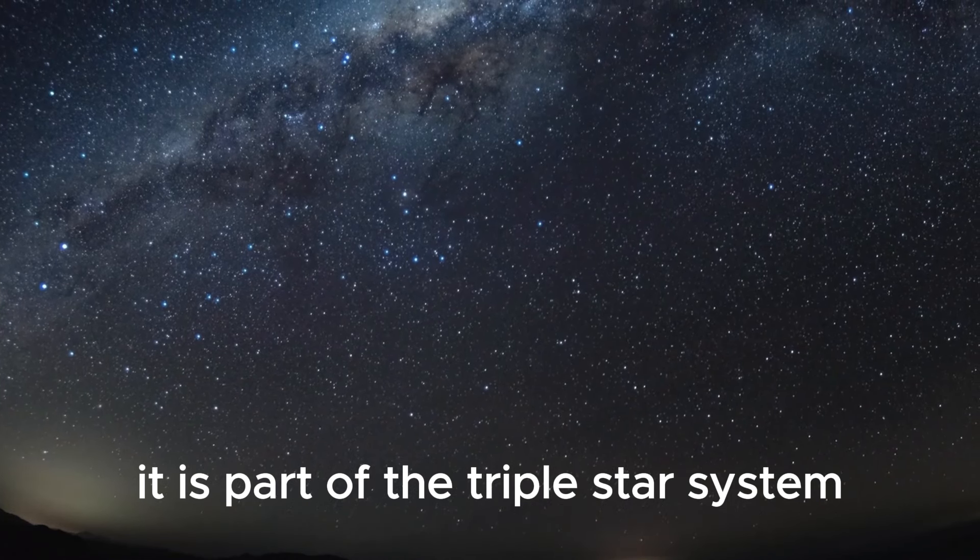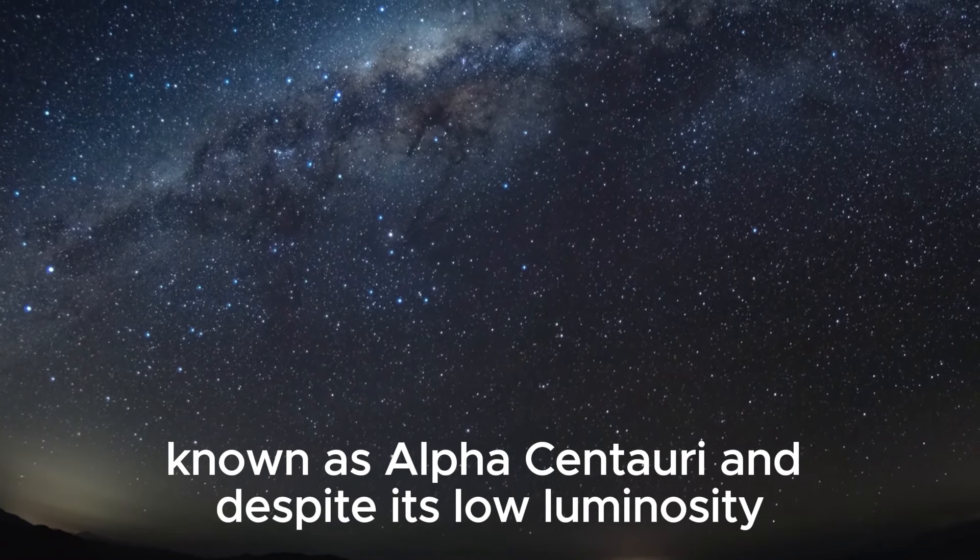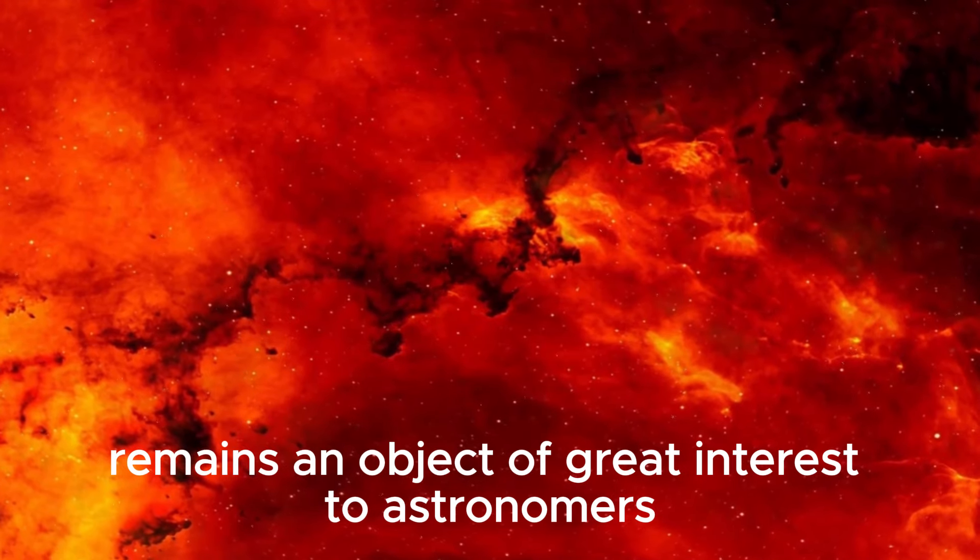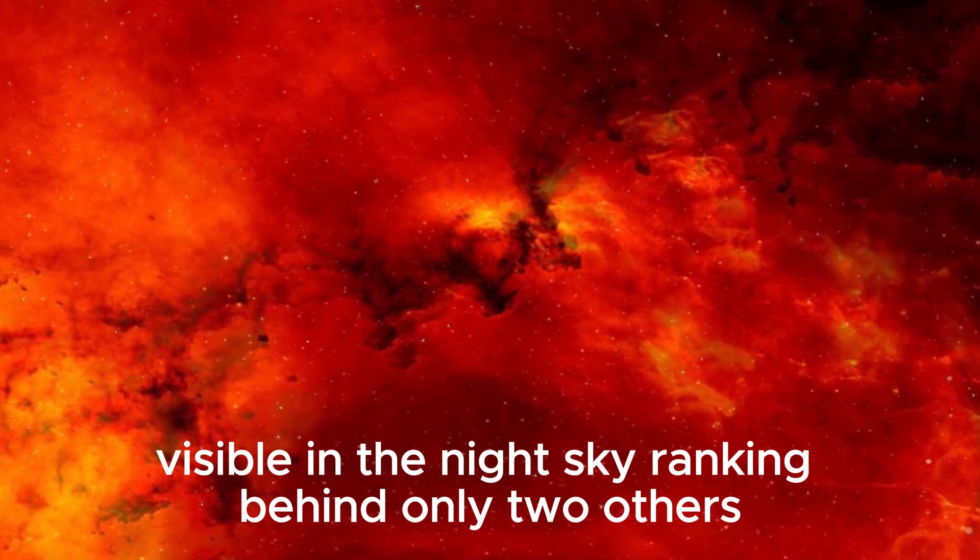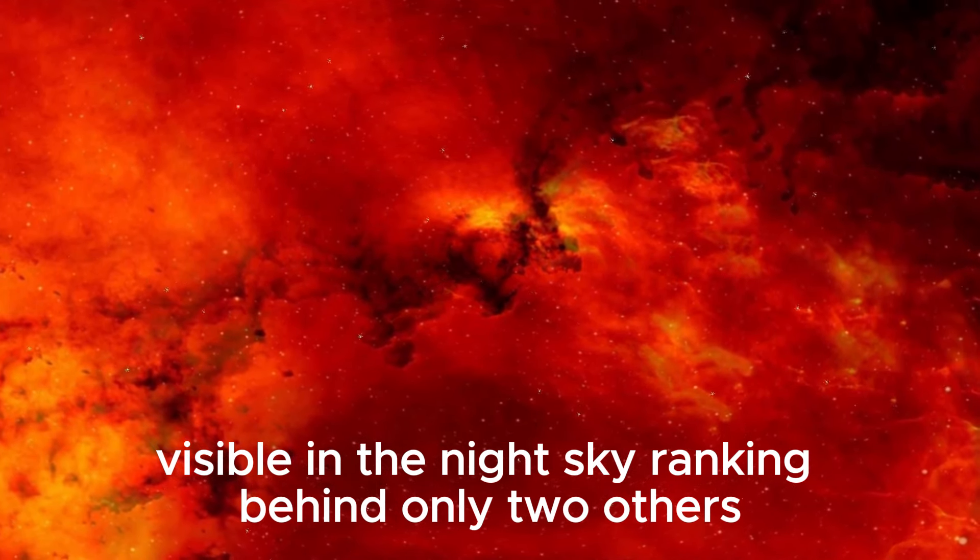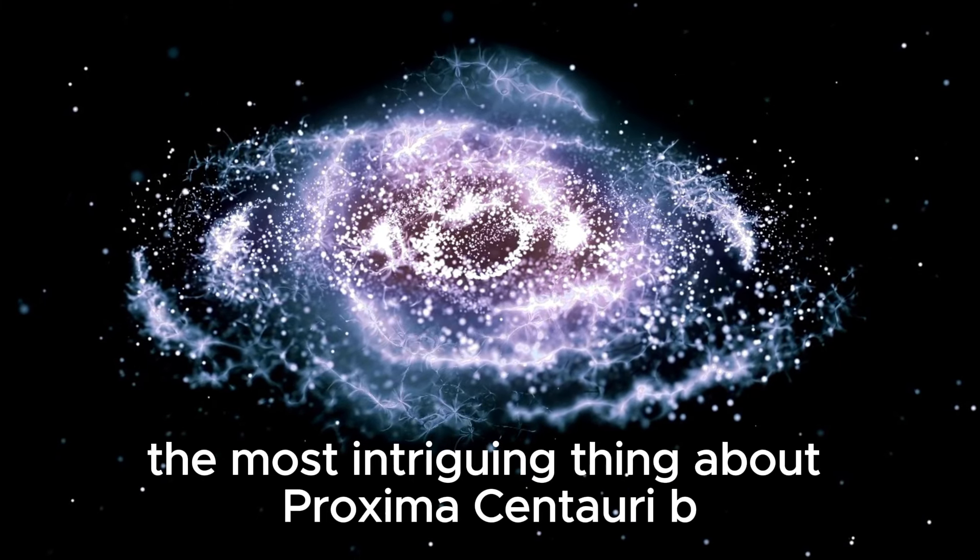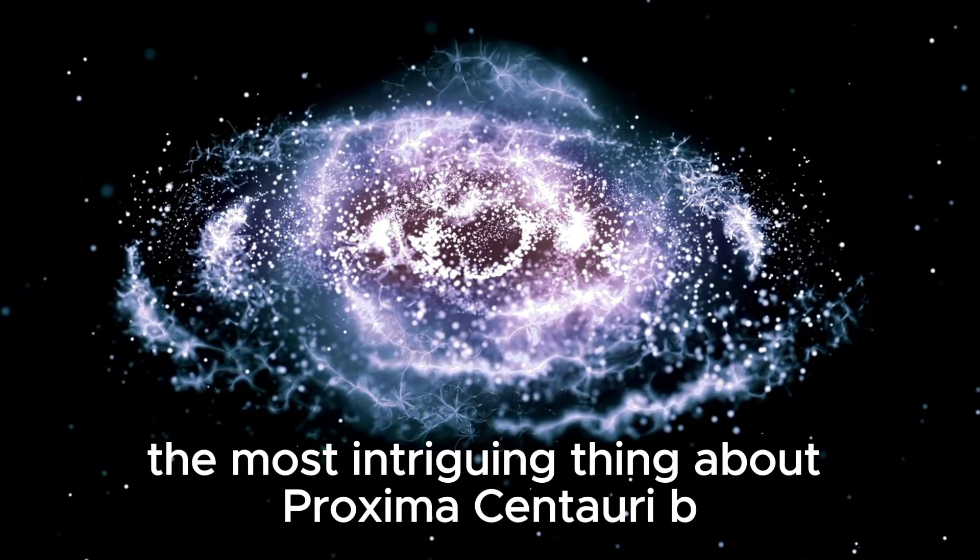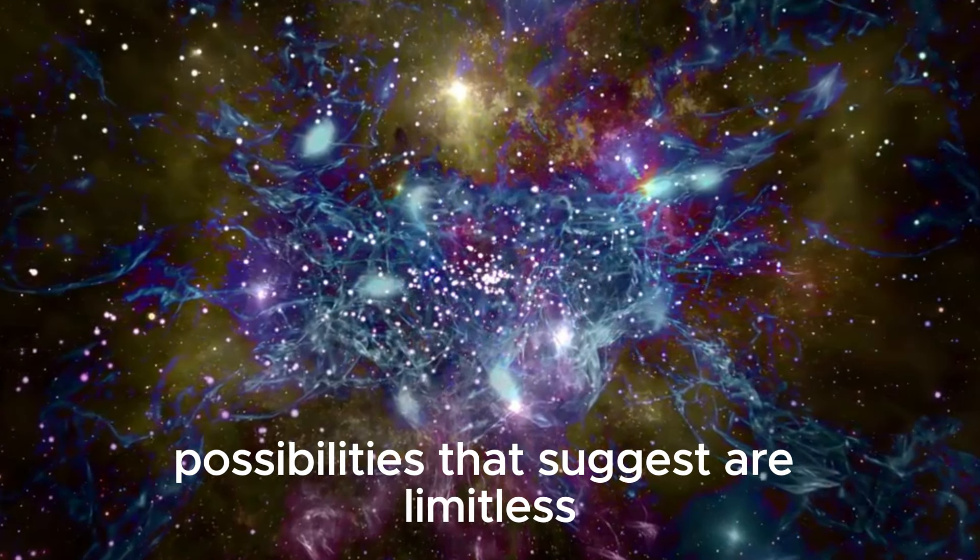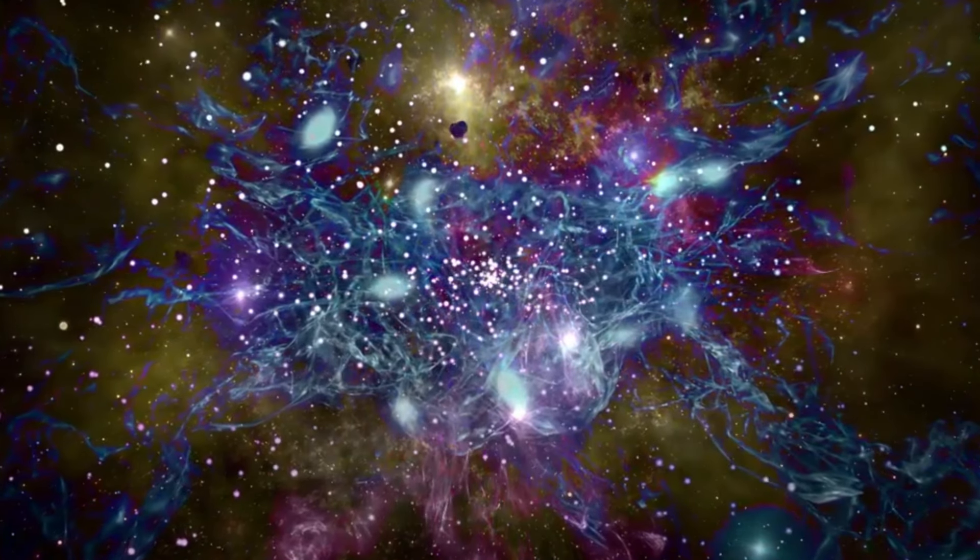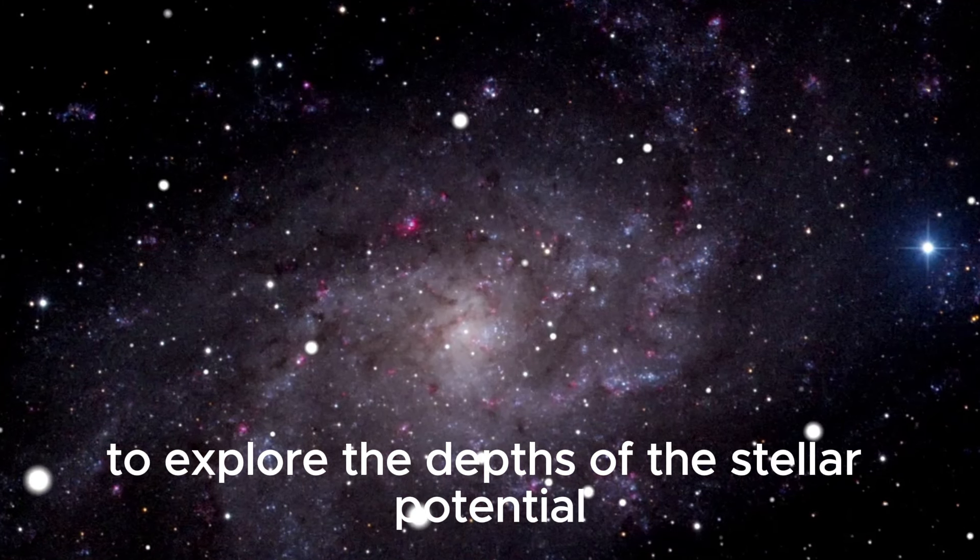It is part of the triple star system known as Alpha Centauri and, despite its low luminosity, remains an object of great interest to astronomers. The Proxima Centauri system stands out as one of the constellations visible in the night sky, ranking behind only two others known as Sirius and Procyon. However, the most intriguing thing about Proxima Centauri b is its potentially habitable position within the habitable zone of its star. Possibilities that suggest are limitless, which has led astronomers to embark on an expedition to explore the depths of this stellar potential.